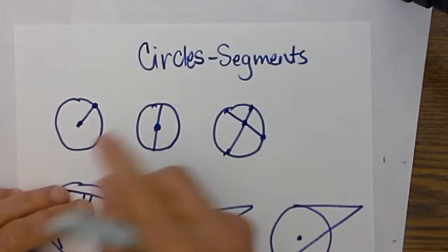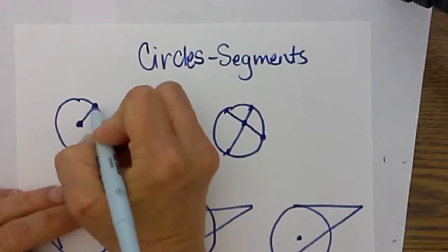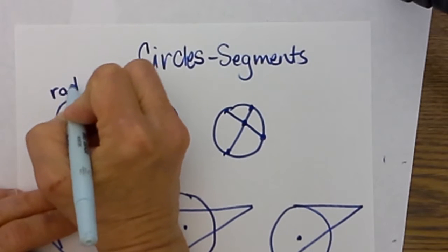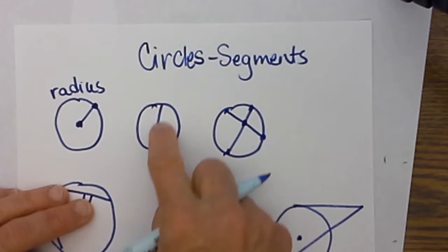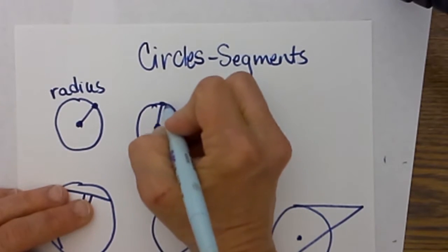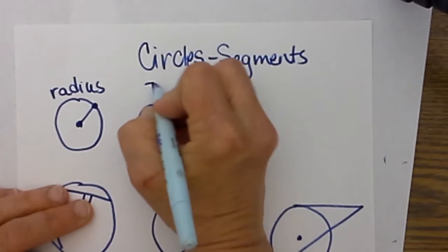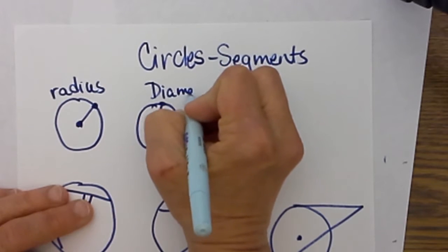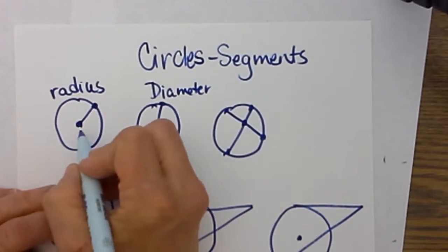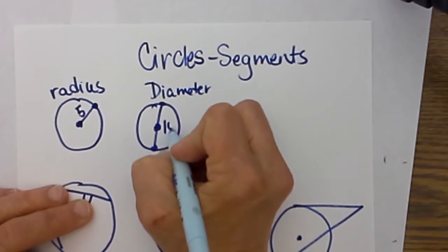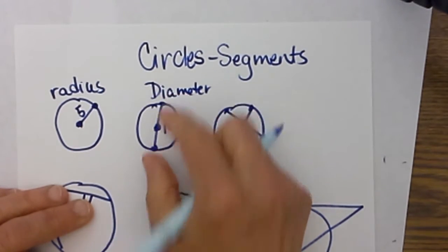The first one everyone should be familiar with is from the center to the edge, that is a radius. The second one is a segment that goes all the way through the center of the circle, and that one is a diameter. The ratio of radius to diameter is a 1 to 2 ratio, so if the radius is 5 the diameter would be 10. It is twice the length.